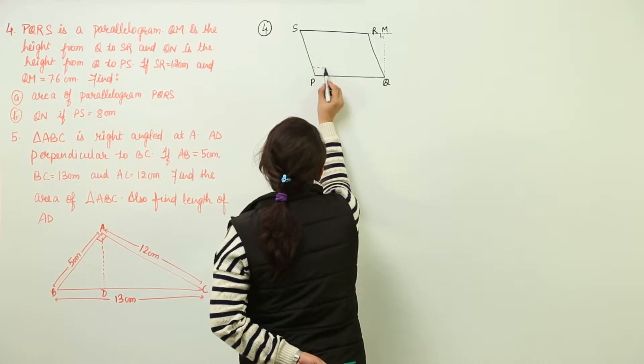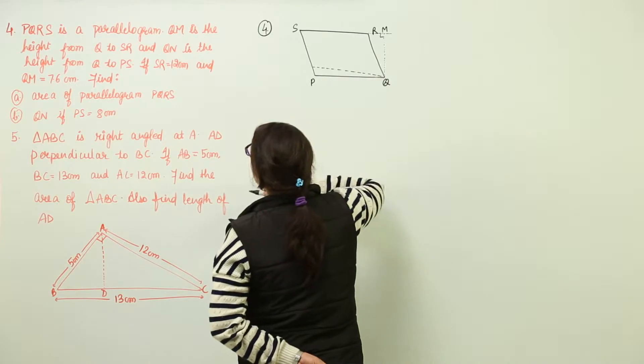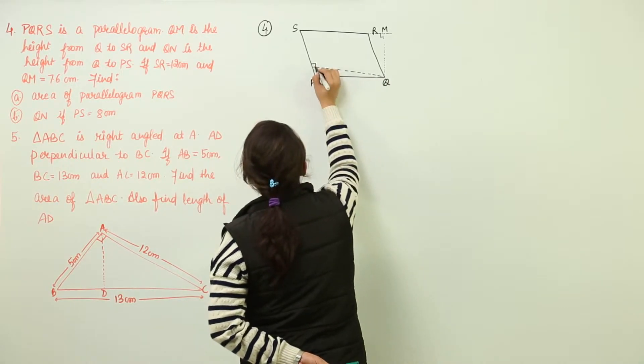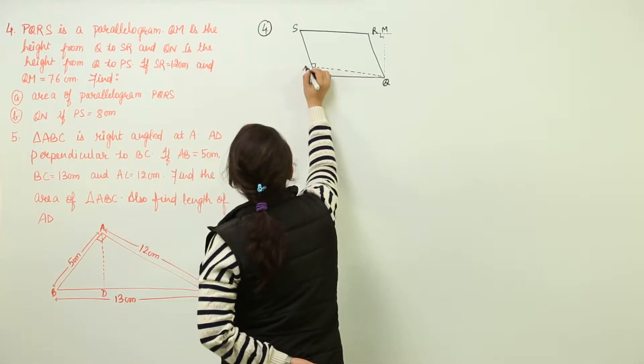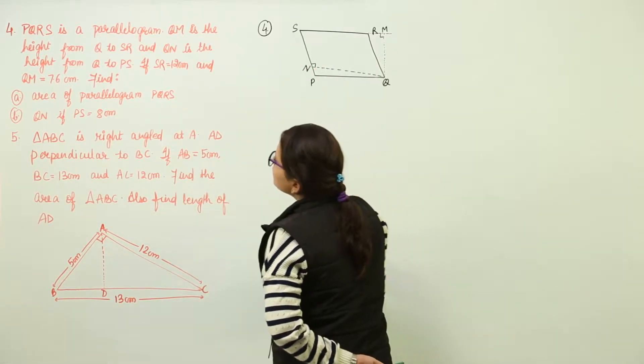So again we are going to draw a perpendicular from point Q to PS that is this one and this is known as QN and that was point M.